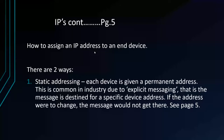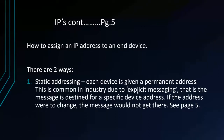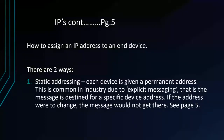There are two ways to assign an IP address to an end device. The first is static addressing — each device is given a permanent address. This is common in industry due to explicit messaging, where the message is destined for a specific device address. If addresses were to change, data would not reach its destination.